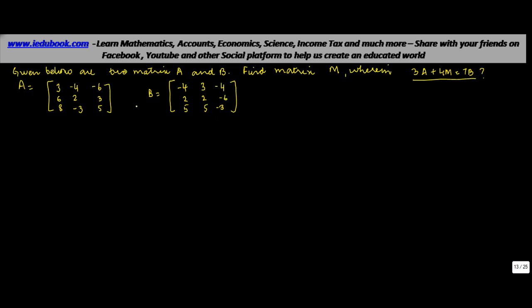So you are given two matrices A and B. The values are as under. You are told to find out another matrix M wherein M is equal to the values as described in this particular equation. The values of A are given as 3, 6, 8, minus 4, 2, minus 3, minus 6, 3, and 5, and B is equal to minus 4, 2, 5, 3, 2, 5, minus 4, minus 6, and minus 3.